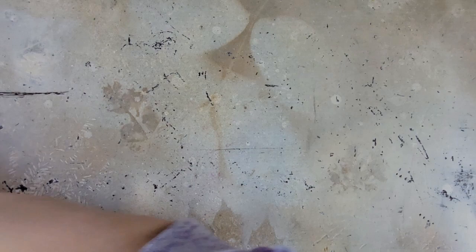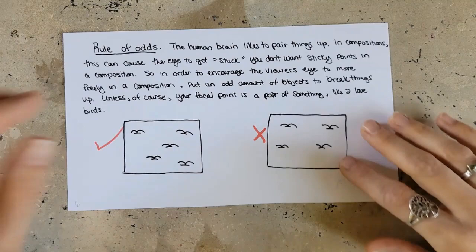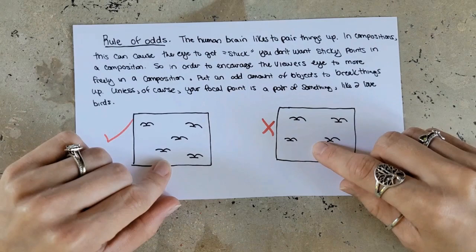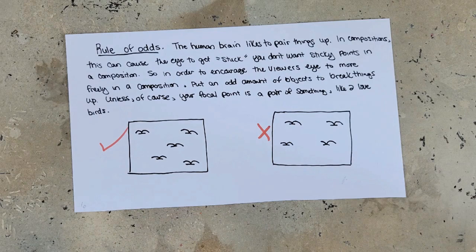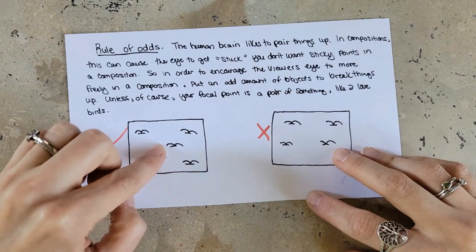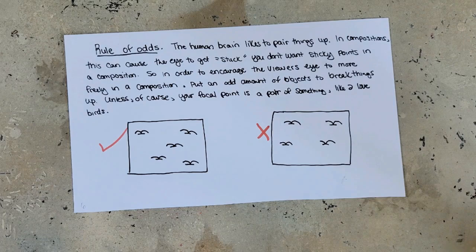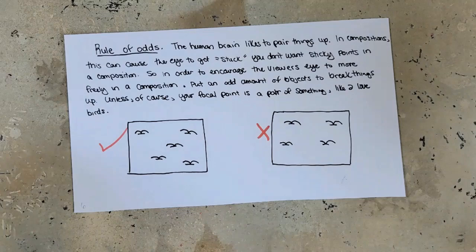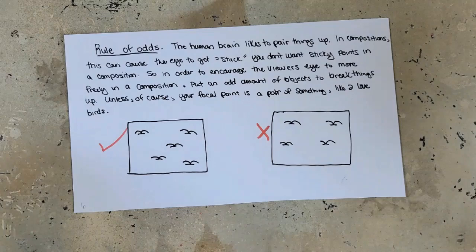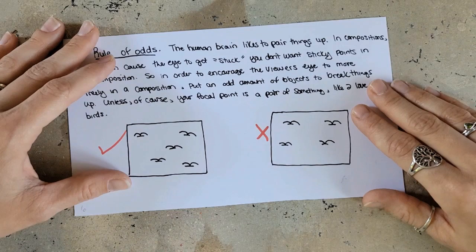That takes me to the rule of odds. This is a great way to balance your composition because the human brain likes to pair things up automatically — and this can create a sticky point. If you have two pairs, your eye might get stuck on one of the pairs. In order to encourage the viewer's eye to move freely, you put an odd amount of objects to break things up. Unless your focal point happens to be a pair — like lovebirds, that's fine. But if you're doing a landscape with birds in the sky, you don't want the eye stuck there, so put an odd number of birds so it doesn't create sticky points.